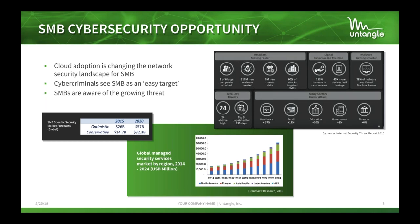There is a pretty interesting opportunity in the cybersecurity world for small to medium businesses right now — that's a good thing and a bad thing. Small businesses are now targets, which has created this opportunity, and the numbers are not decreasing. Cloud adoption is actually changing the network security landscape for SMBs. For small businesses that don't have a dedicated network administrator or CISO, Untangle can help.